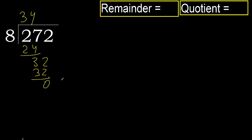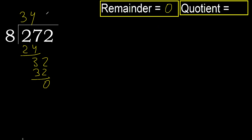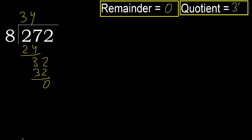There is no next number, therefore finish. 272 divided by 8 is 34.